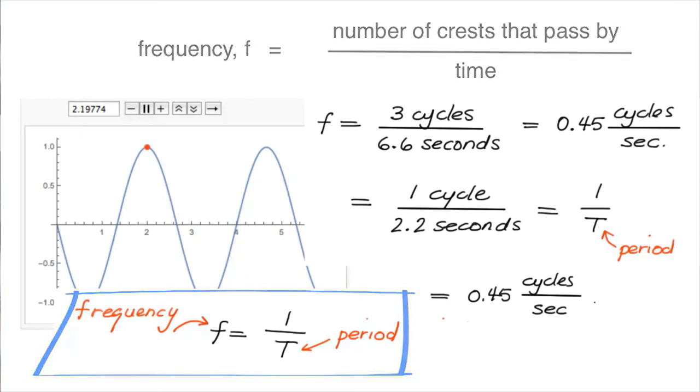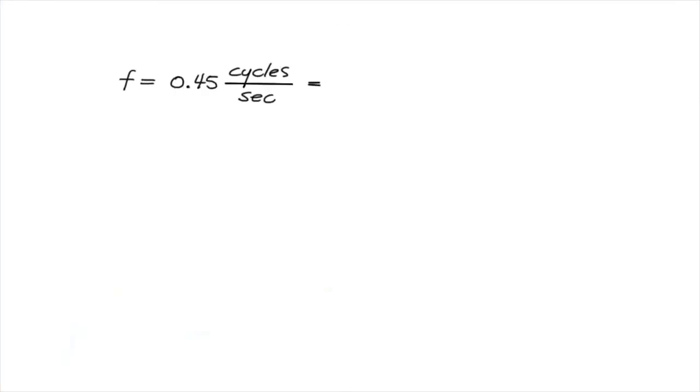By the way, frequency has units of inverse seconds. As the number of cycles is just a number, it doesn't have units of mass, length, or time, or a combination of these. So the frequency is expressed as 0.45 inverse seconds.